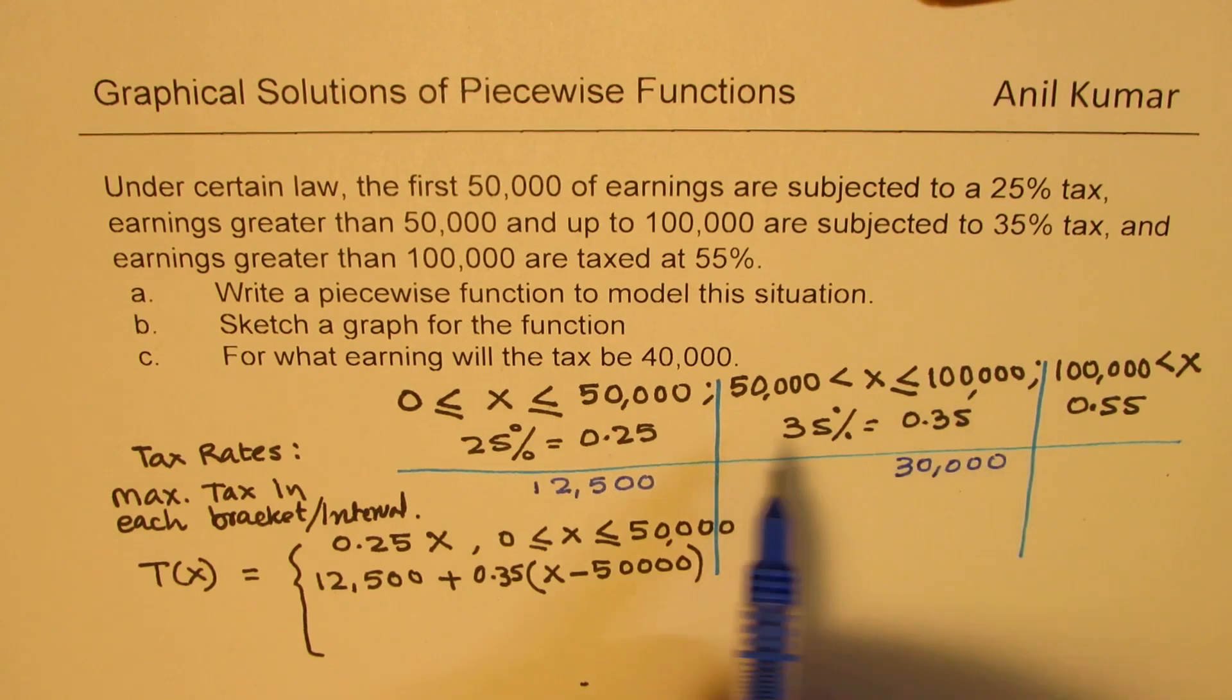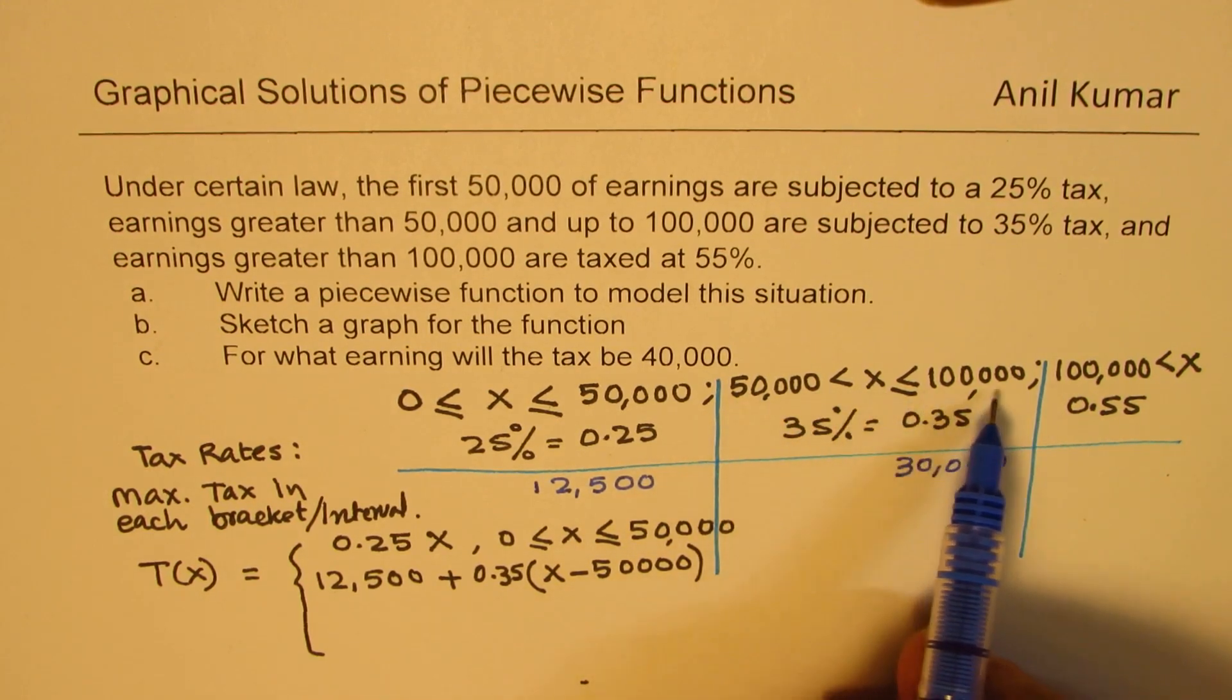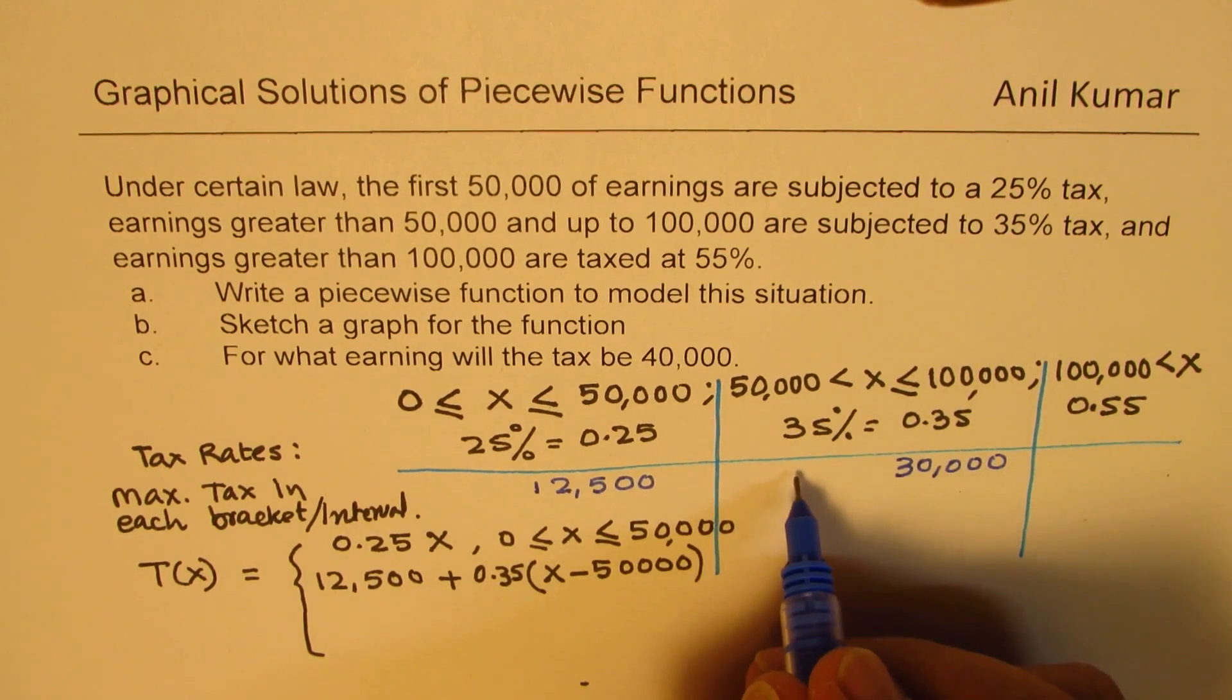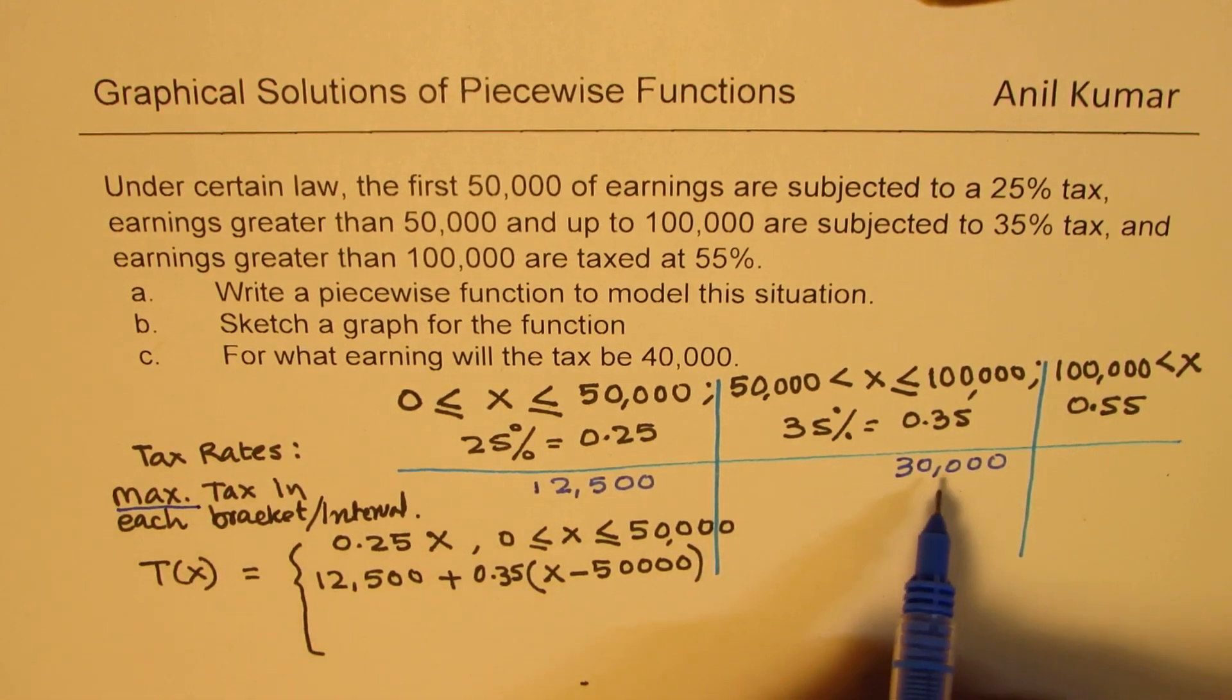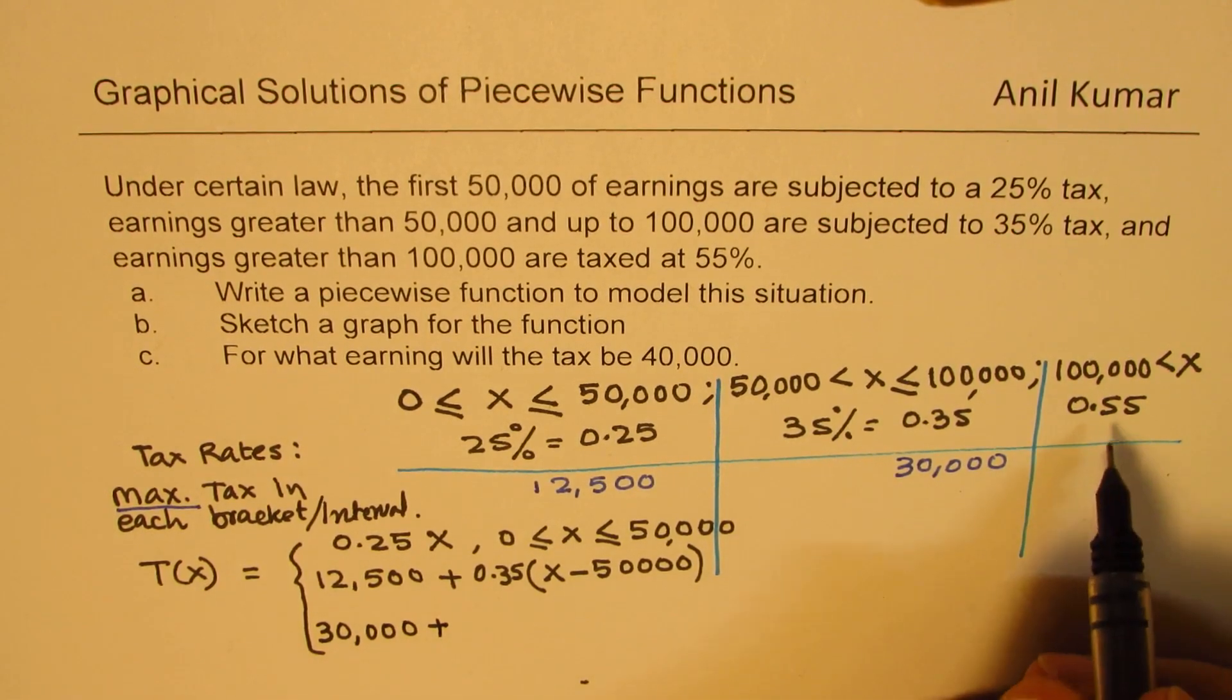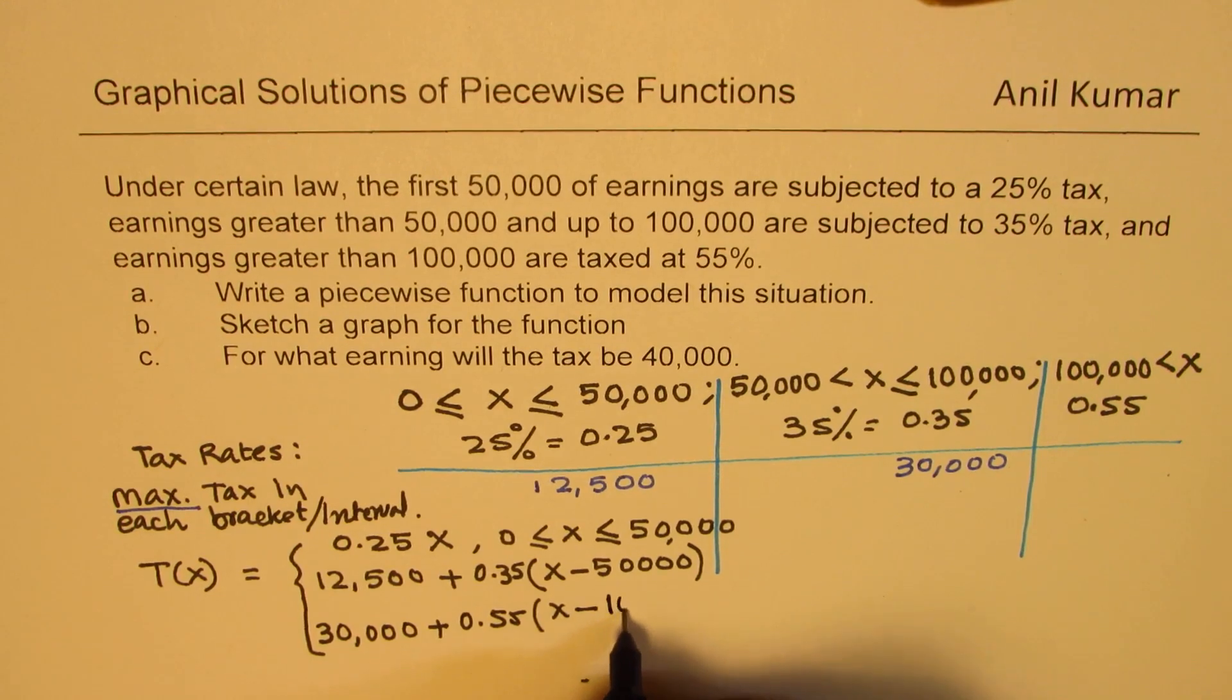You pay 12,500 on the first 50,000, and all the amounts in between will be taxed at 35%. So maximum, this is your maximum. So we are saying maximum tax will be, in this bracket, 30,000. So when you move to the next bracket, this 30,000 you have already paid. And balance will be taxed at 55%. Does it make sense to you?